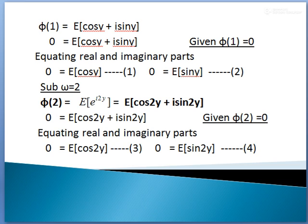Equating the real and imaginary parts separately: the real part gives 0 = E[cos(Y)], and the imaginary part gives 0 = E[sin(Y)]. So we split into real and imaginary parts — first equation and second equation are written down.